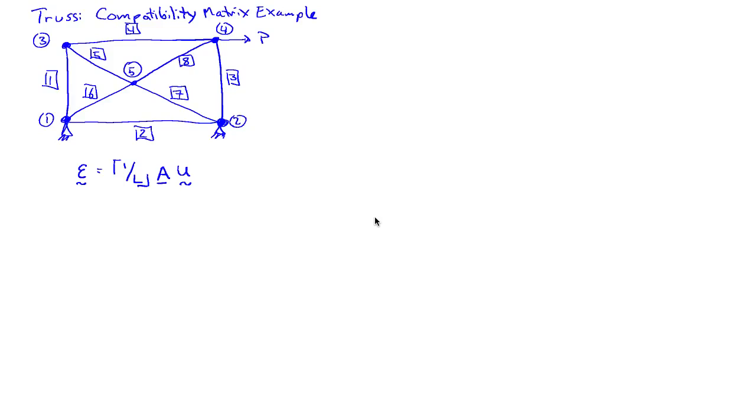Consider the truss shown. We have a truss here with eight bars and five nodes, and I'd like to go through the process of setting up the compatibility matrix for this system.